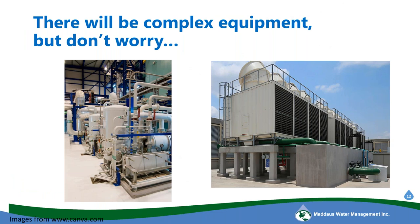Almost all facilities are going to have some kind of complex equipment. Here we see a large cooling tower, common in many facilities, and a vacuum pump, common in hospitals and grocery stores. This equipment is complex, but not to worry — we can still detect failures as part of our daily routine because most of this equipment is going to have a drain.